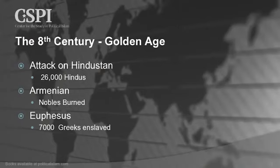Islam moves to the east. There are attacks in Hindustan — 26,000 Hindus die in one battle. Then in Armenia, bishops and nobles invited the Muslims to a debate. After the debate was over, the Muslims pushed everyone into a church and burned it down on top of them. In Ephesus, 7,000 Greeks were enslaved.